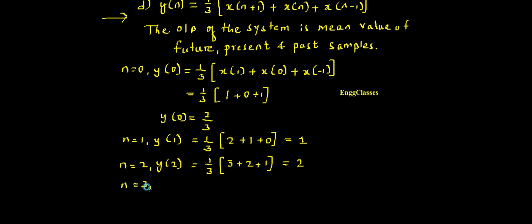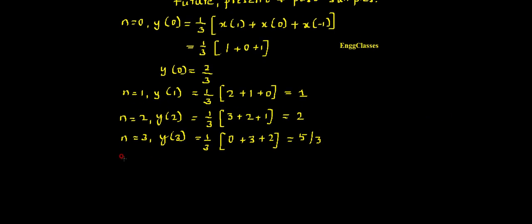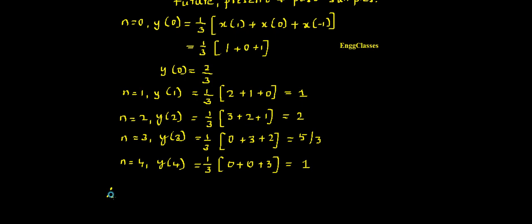For n = 3: y(3) = 1/3 * [x(4) + x(3) + x(2)] = 1/3 * (0 + 3 + 2) = 5/3. For n = 4: y(4) = 1/3 * [x(5) + x(4) + x(3)] = 1/3 * (0 + 0 + 3) = 1. Combining all, at the 0th position y(0) = 2/3.